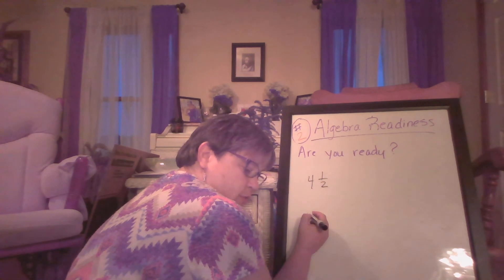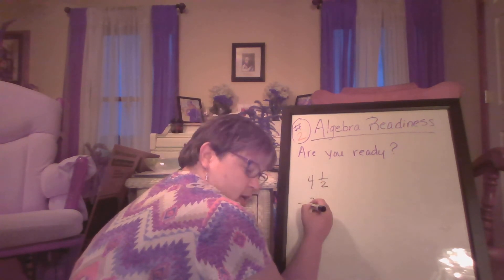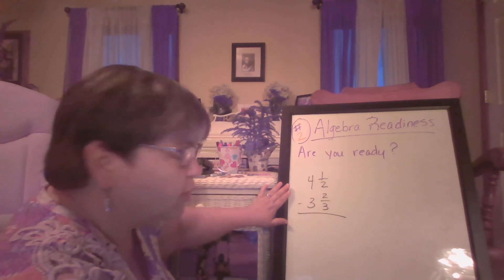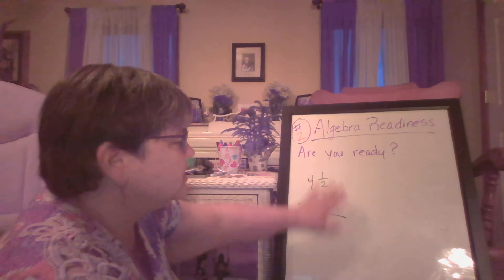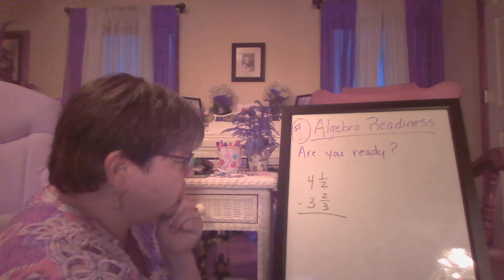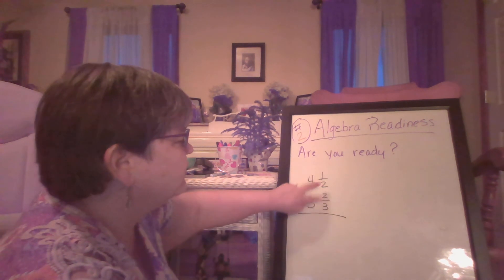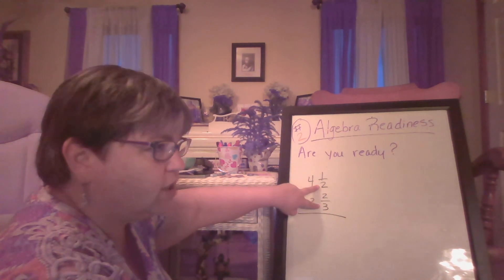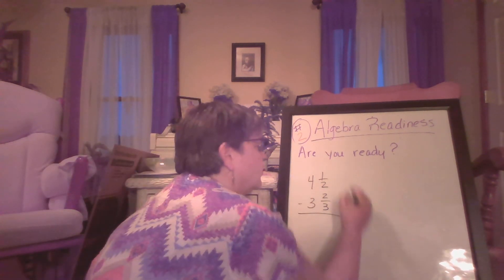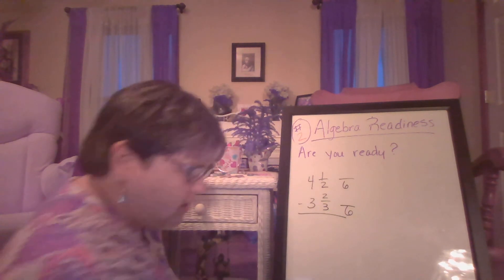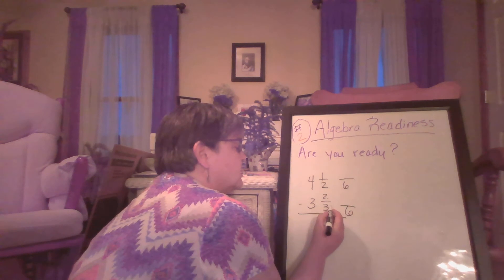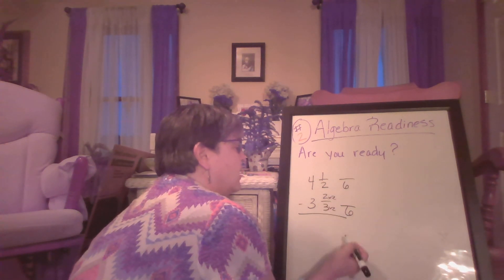Now I want to show you a subtraction problem with mixed numbers: four and a half minus three and two-thirds. What I notice is that my denominators need to be the same and they're not. So the first thing I'm going to do is find a common denominator for three and two. Two, four, six — three, six — yes, six is a good common denominator. I was counting multiples of two and three until I found a number they have in common.